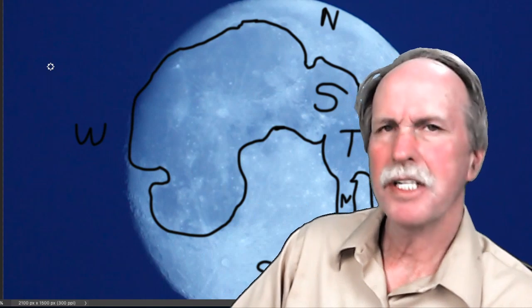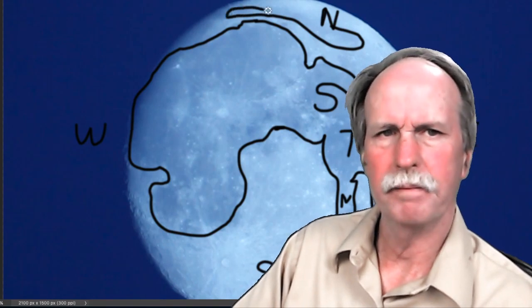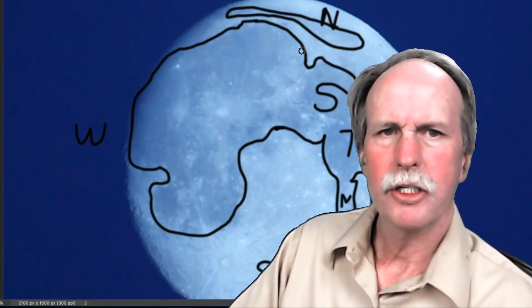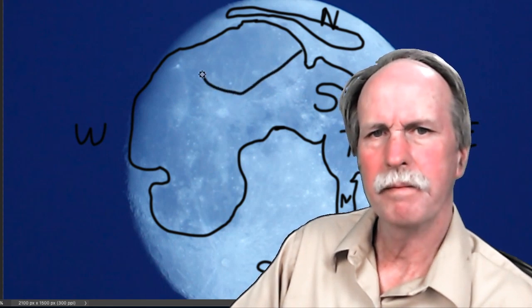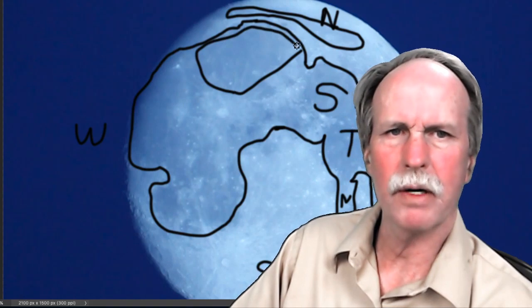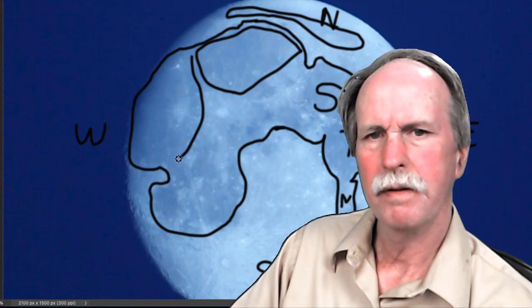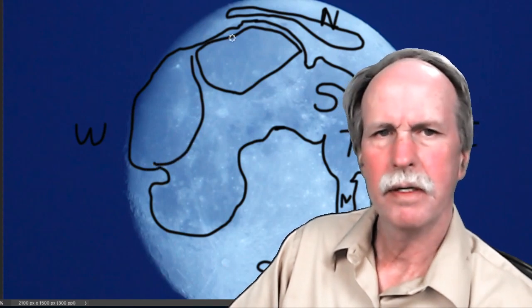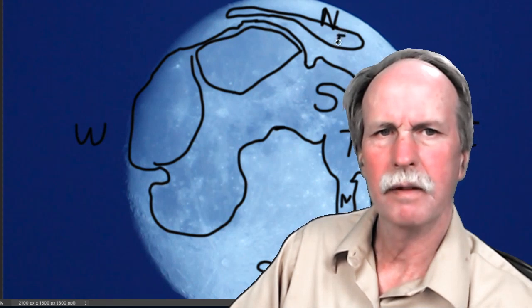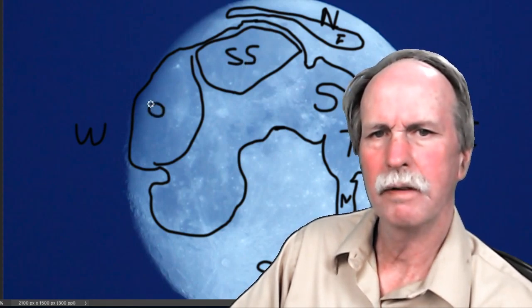Now when we look at the western side of the moon there are three major seas that I want to point out real quickly. Near the north of the moon we have the frigid sea and that's this dark area right up here. Just below it we have the sea of showers and that is right above the ocean of storms. So we've got the frigid sea here, the sea of showers, and the ocean of storms.